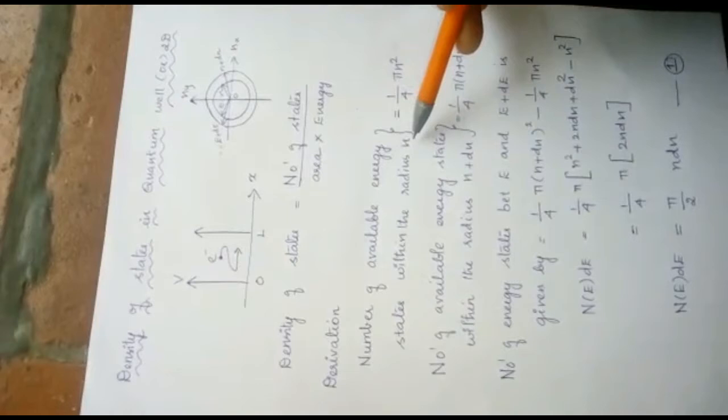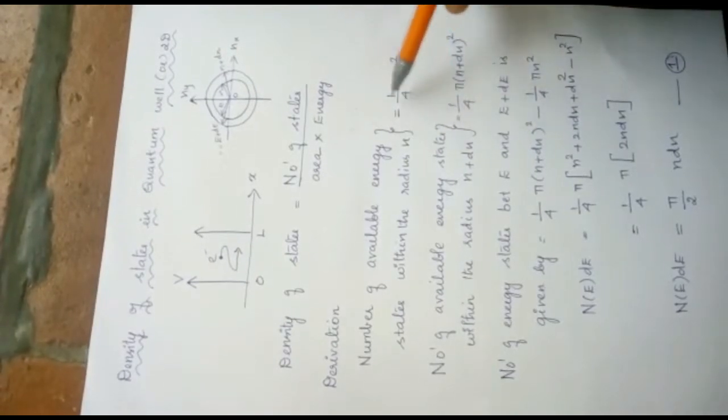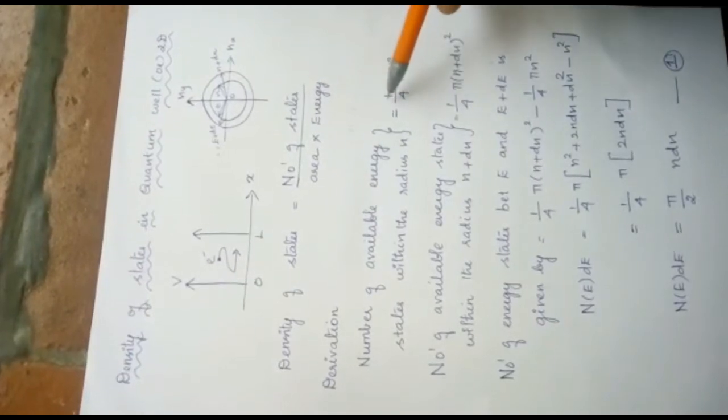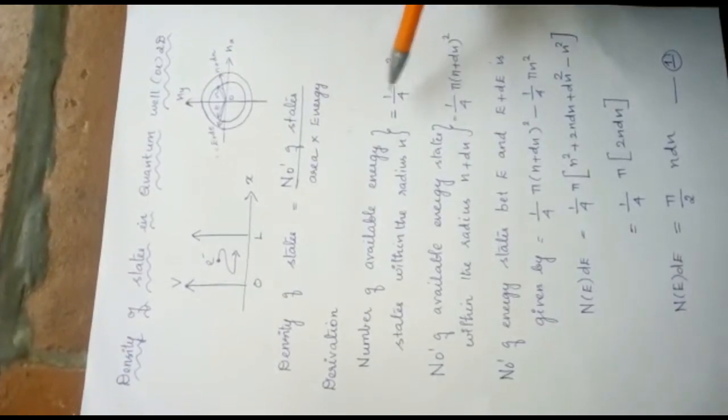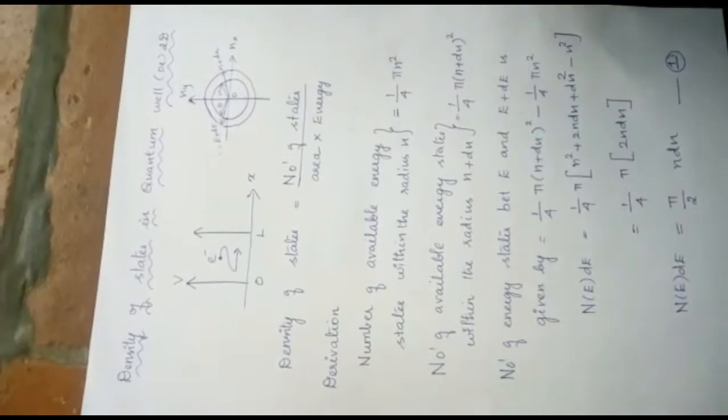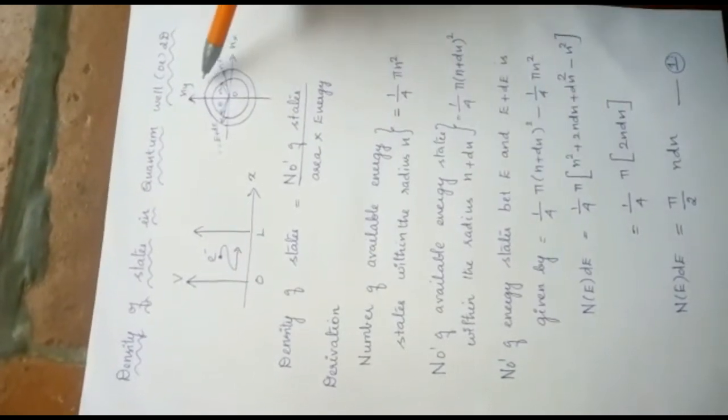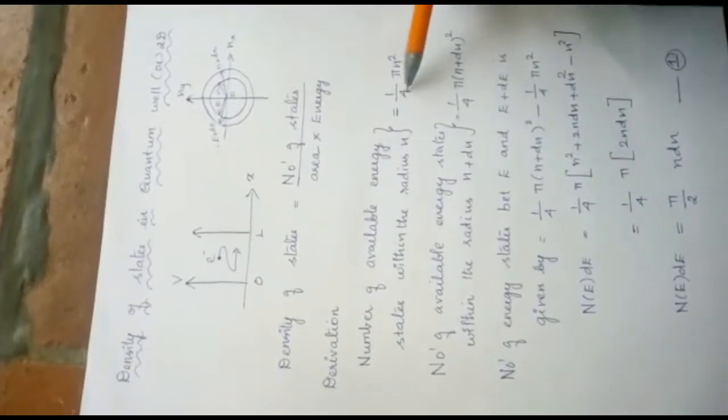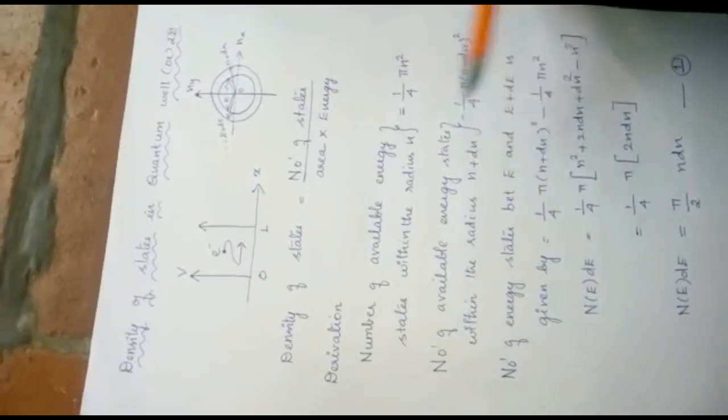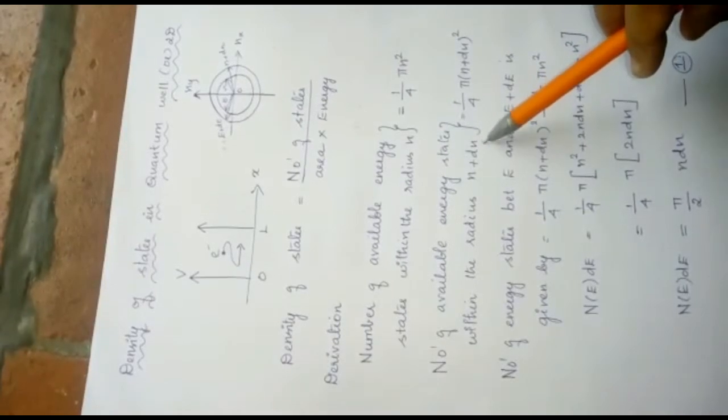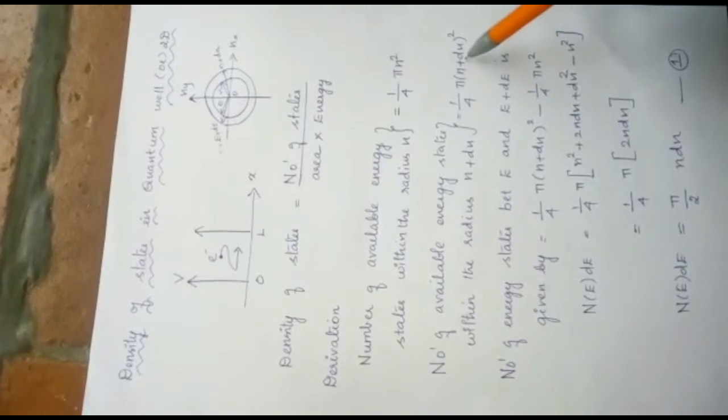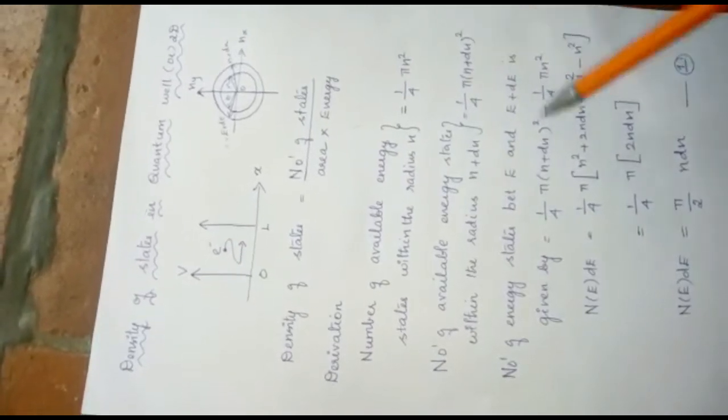The number of available energy states within a radius n is equal to 1 by 4 pi n square. Here, n is the radius. Here, we are putting 1 by 4 because we are considering only the quadrant. That is, 1 by 4th portion of the sphere. That is why we are putting 1 by 4. Next, the number of available energy states within a radius n plus dn, 1 by 4 pi. We are simply replacing n by n plus dn, the whole square.